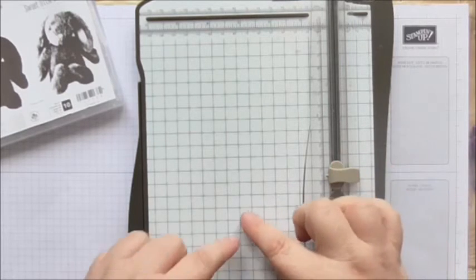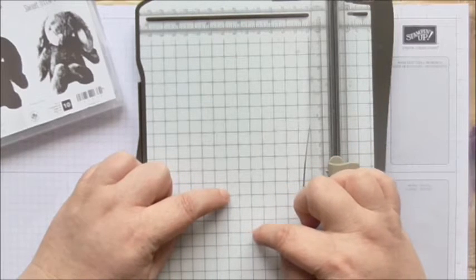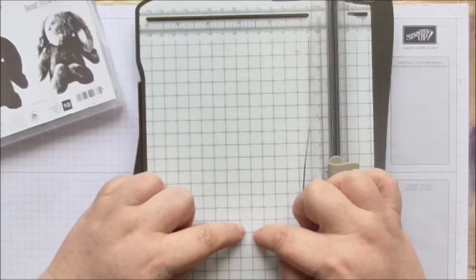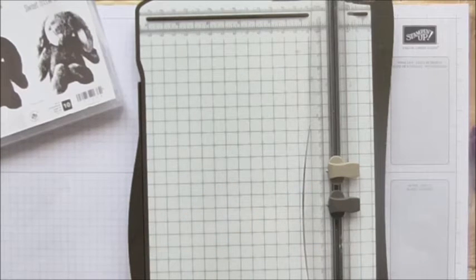And that's because the blade is a triangle shape, so obviously it gets blunt at the point, but then the sides of the blade are really sharp. And so if you lift your paper up, you're using the sides of the blade rather than the point. Simple.